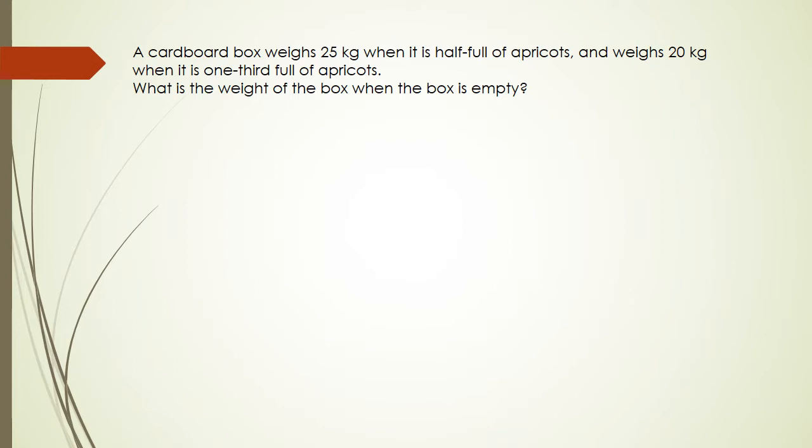Okay, now this question is very similar to the 2017 one, just messed around with the numbers as usual. So what we've got is one cardboard box. It weighs 25 kg when it's half full of apricots. So we got half full of apricots and that's 25 kgs. So I'm going to write that as a statement. So that means I've got B plus half filled with apricots and that's equal to 25 kgs. Alright, so that's our first statement there.